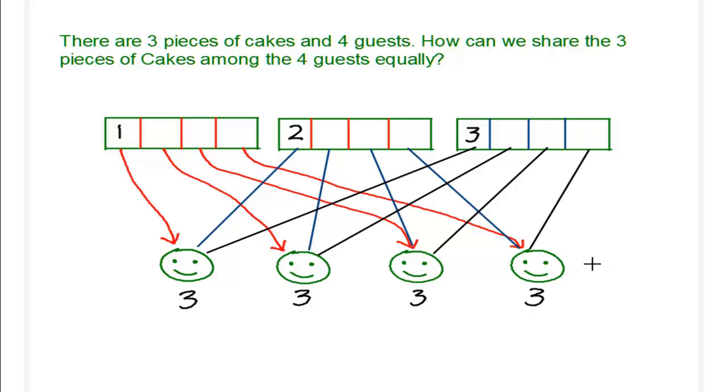There are a total of four guests. Each of them are receiving three pieces of cake. So in total, how many pieces have we got? We have got a total of 12 pieces. And each guest receives three of them.